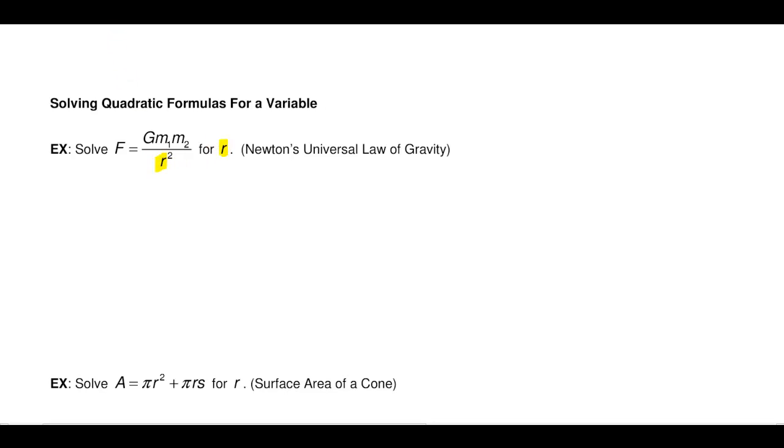So what I need to do first of all is go ahead and multiply both sides by r squared to get rid of this fraction. And that's going to give me, if I multiply this side by r squared and this side by r squared, over on the right the r squareds will cancel and I'll get that capital F times r squared is equal to big G times m1 times m2.